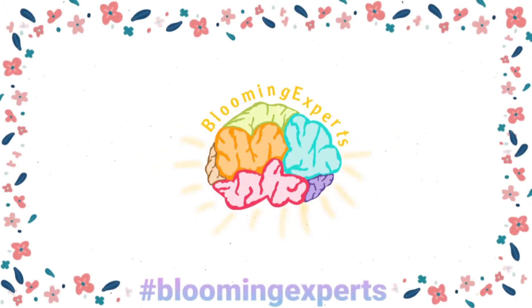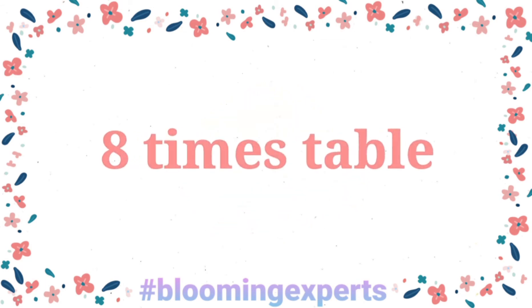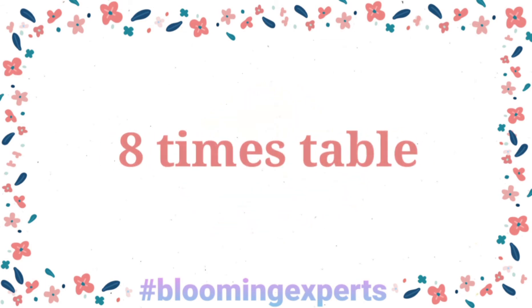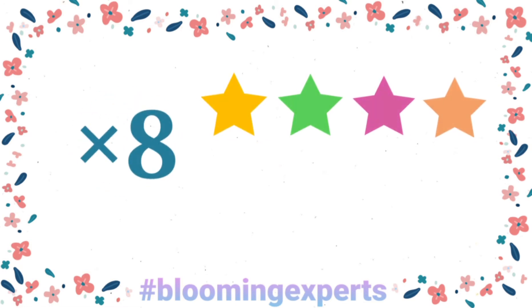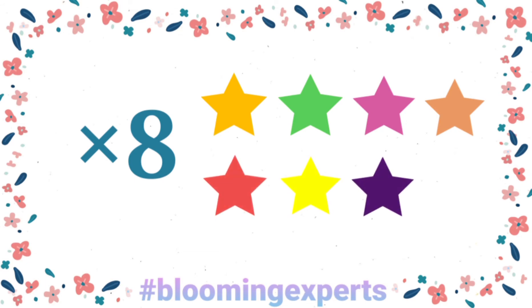Hi kids, welcome to Blooming Experts! In this video we're going to learn the 8 times table. Times 8 means to have a number 8 times. For example, if you have a star times 8, then you'll have 8 stars in total.